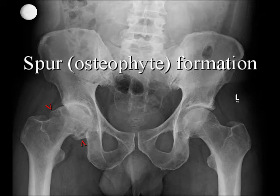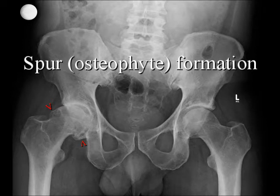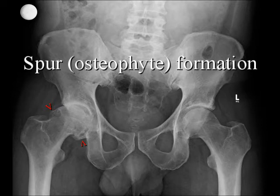Osteophytes are little bony growths that occur on the edges of both the ball and the socket. These are one of the reasons why a person with advanced osteoarthritis typically has a very stiff hip joint and has functional problems like putting on shoes and socks, because the ball of the hip joint is prevented from rolling smoothly within the socket as a result of those spurs.